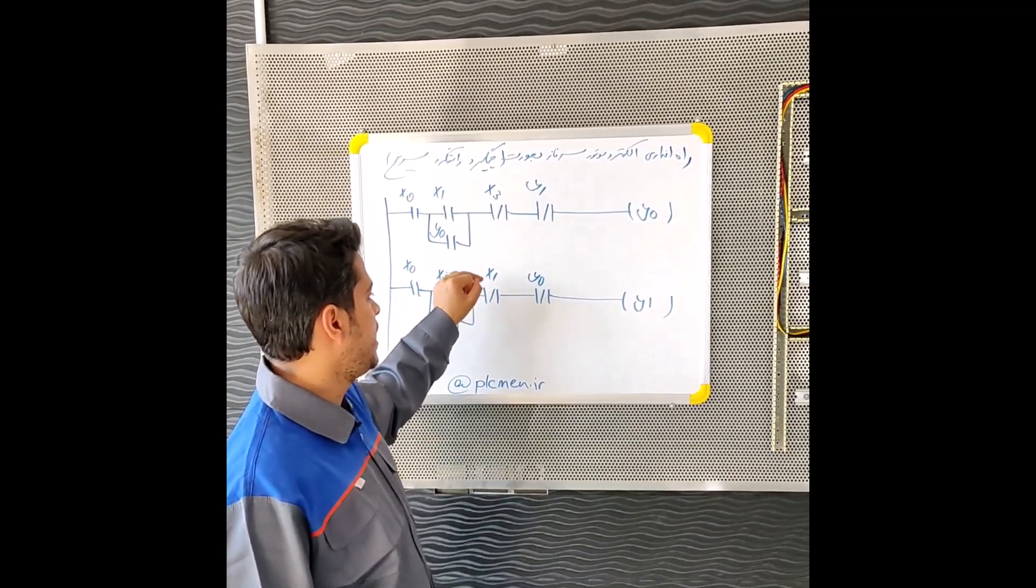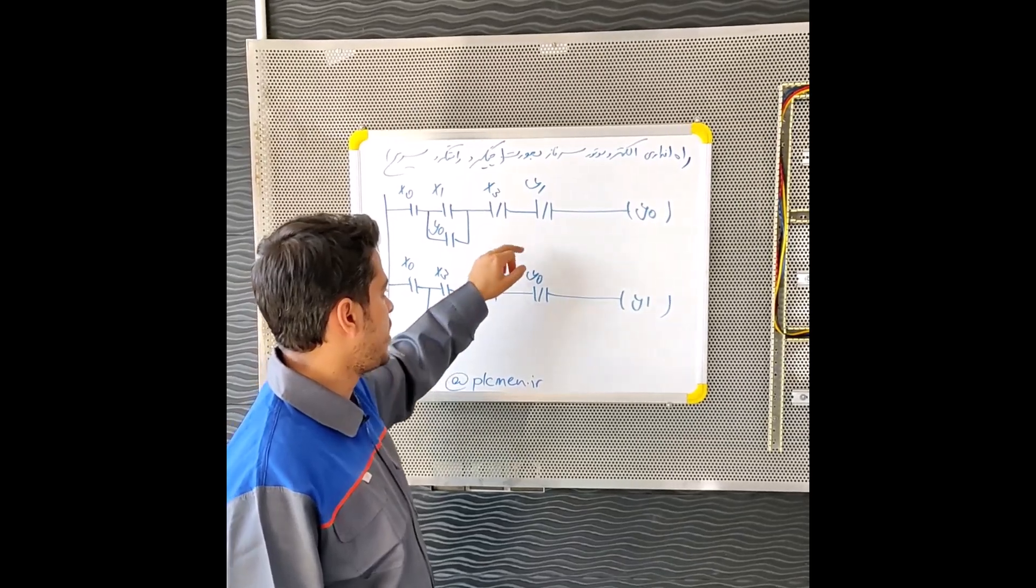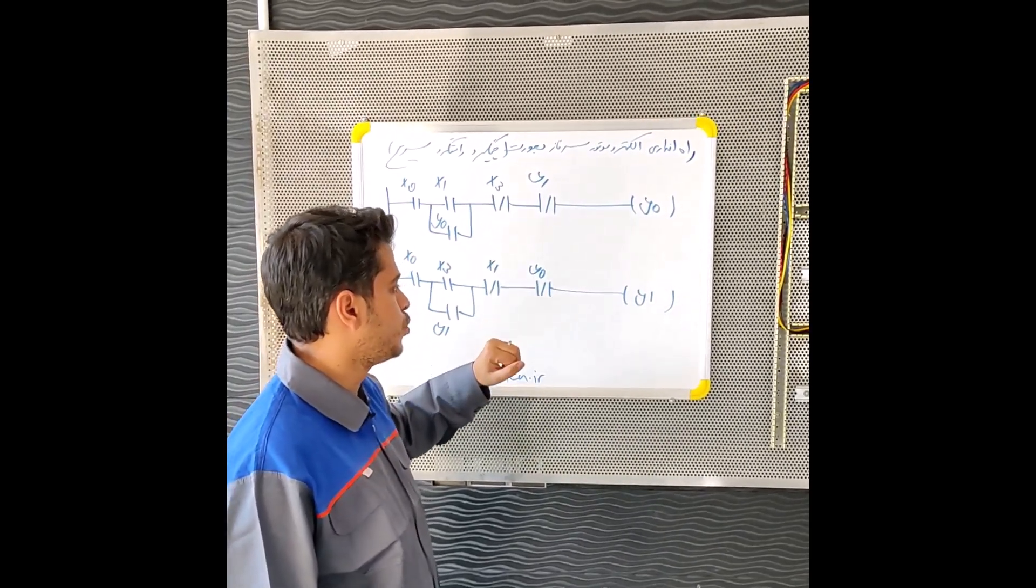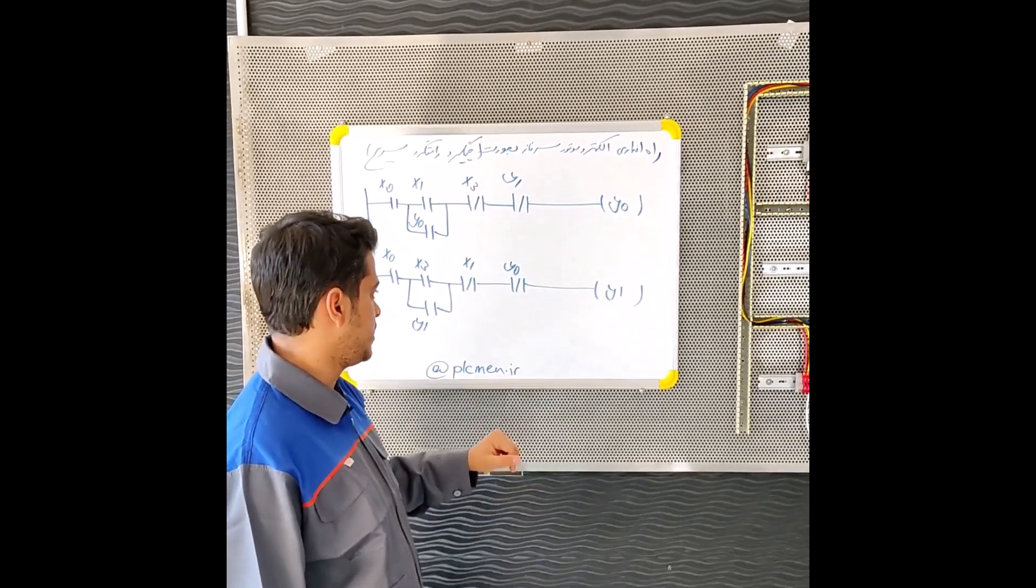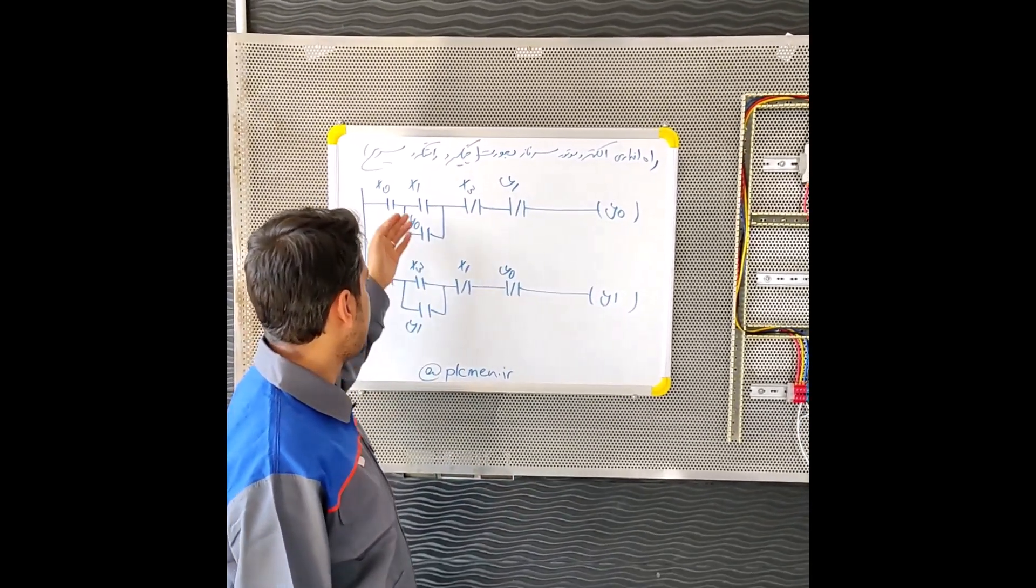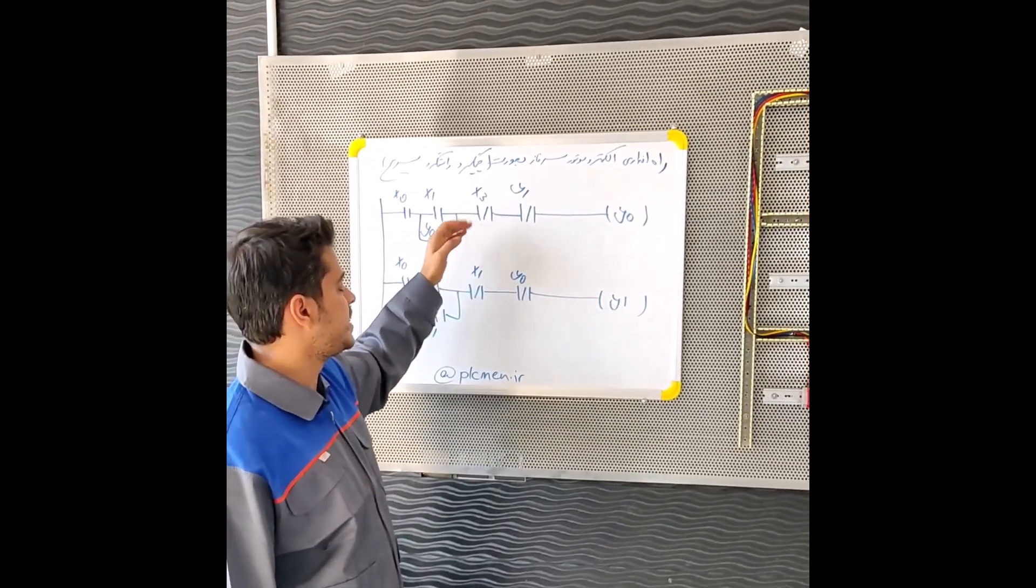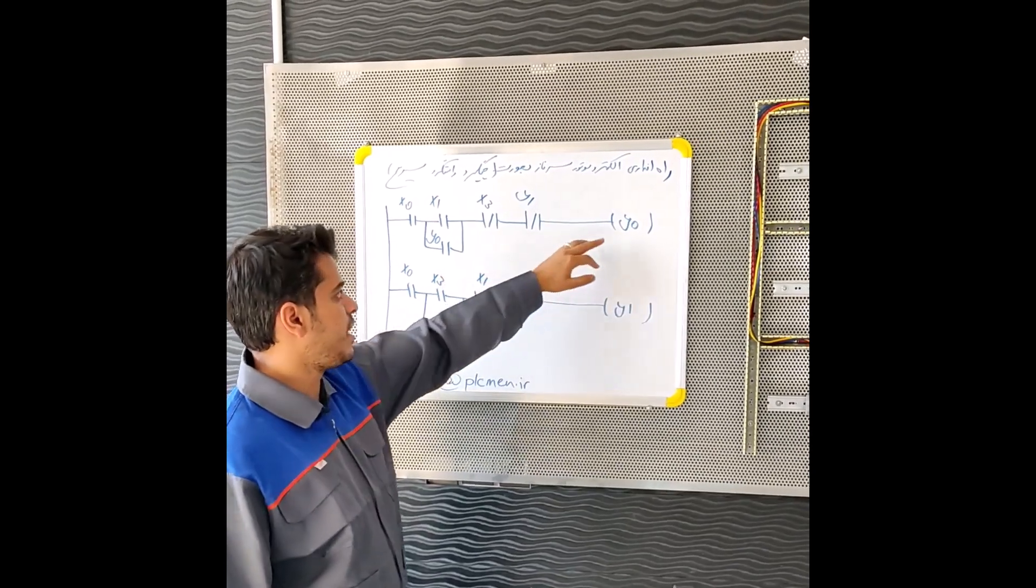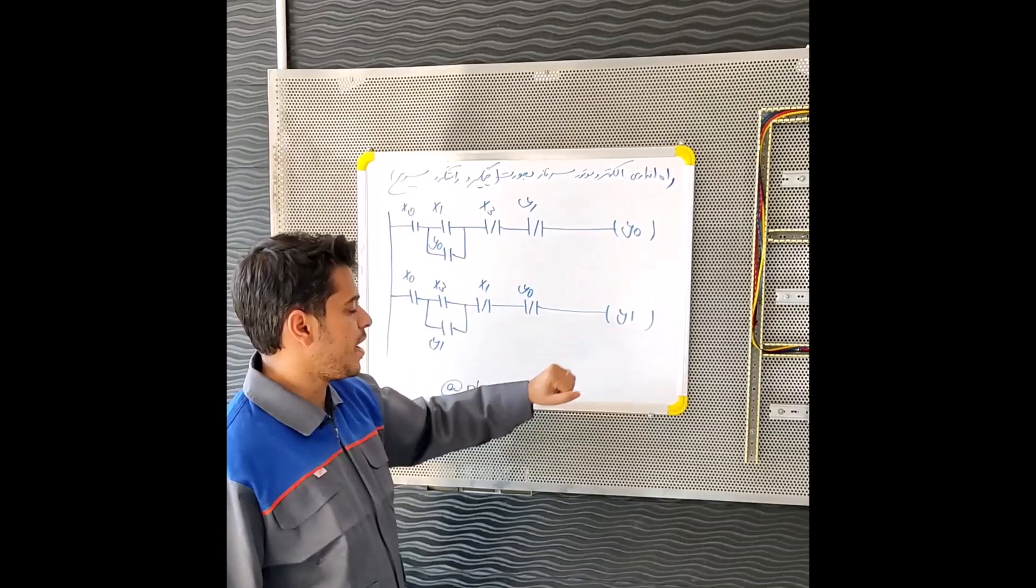We use X1 and X0 as inputs, and Y0 and Y1 as outputs. We want to activate Y0 output when we activate the input X1. When input X0 or X3 is activated, output Y0 is disabled and output Y1 is enabled.